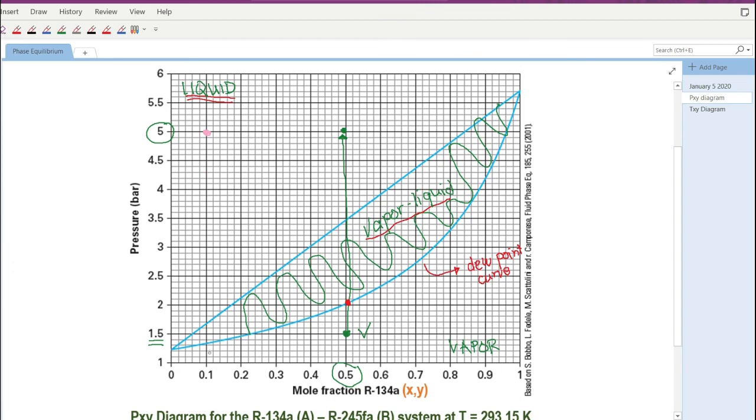Of course, it will pass through this region wherein vapor and liquid phases do exist in equilibrium. So, of course, at this point, since at this point, it's pure liquid and then at this point, it starts to form the first bubble of vapor, right? Because since it's already in vapor liquid territory or area.